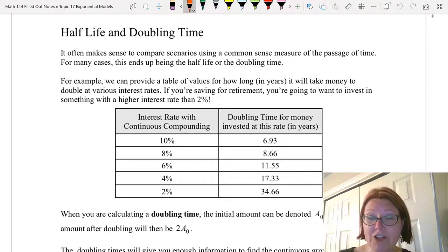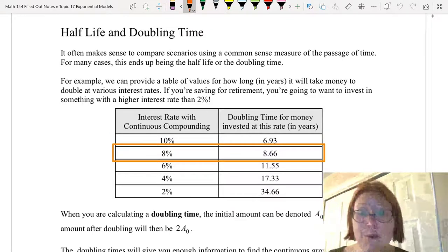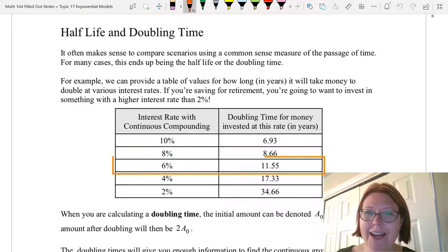Let's look at a table that shows us the doubling time for various interest rates. It doesn't matter how much money you put in, the doubling time will be the same. For example, if we're compounding continuously at 10% it will take 6.93 years for our money to double, which is great. At an interest rate of 8% it'll take 8.66 years for money to double. At an interest rate of 6% it takes 11.55 years for the money to double.